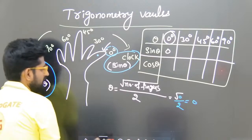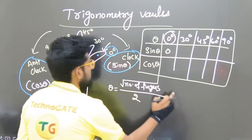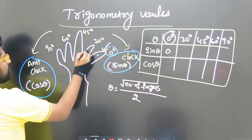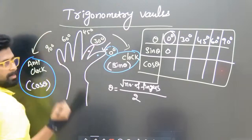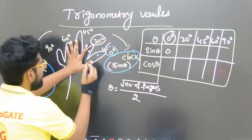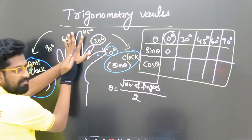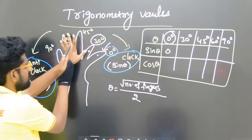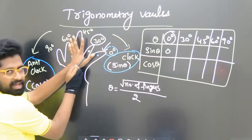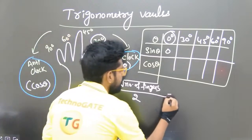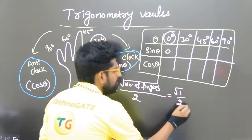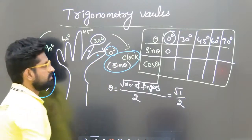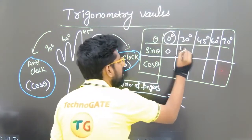Next, 30 degrees. My pointer is here. In the clockwise direction there is one finger, so root of 1 by 2. Root 1 is 1, so the value is 1/2. Hence sin 30° = 1/2.